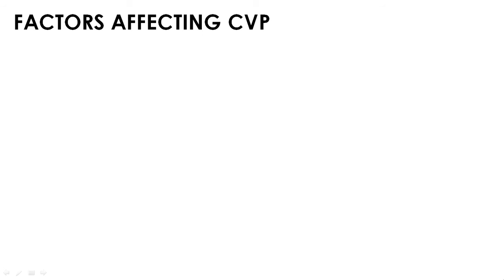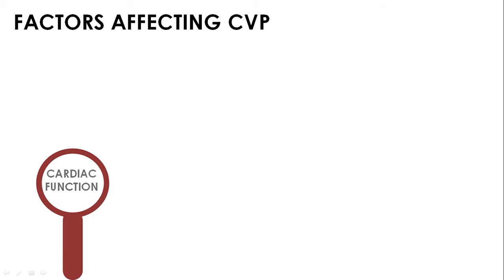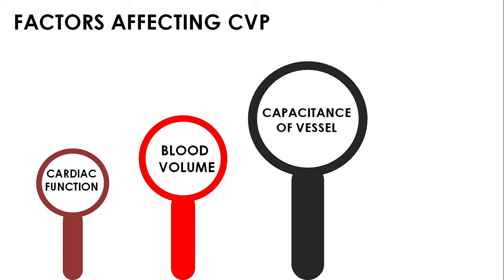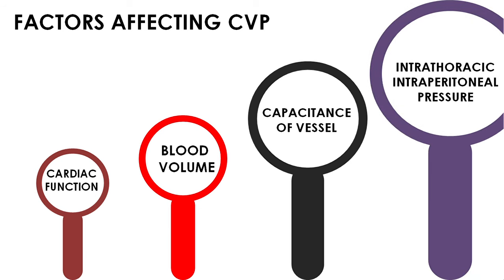Factors affecting central venous pressure include cardiac function, blood volume, capacitance of the vessel, and intrathoracic and intraperitoneal pressure. Remember, a CVP measurement should be viewed in conjunction with other observations such as pulse, blood pressure, respiratory rate, and the patient's response to treatment.